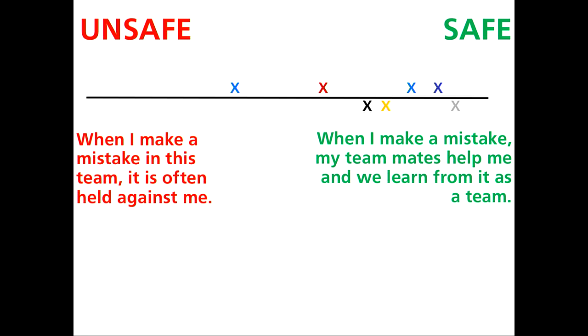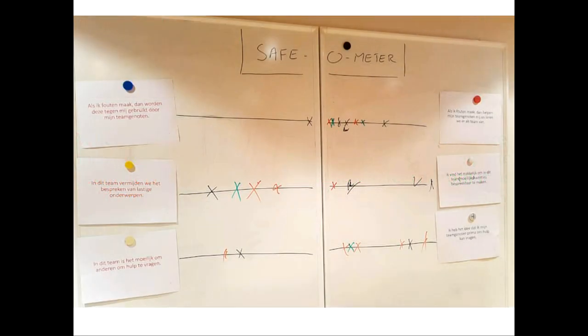You create an unsafe and a safe part on a whiteboard, put a statement on the left and right, then invite people to place themselves somewhere — more towards safe or unsafe. What happens then is you ask people to elaborate on why they placed themselves where they did, and a discussion can start.